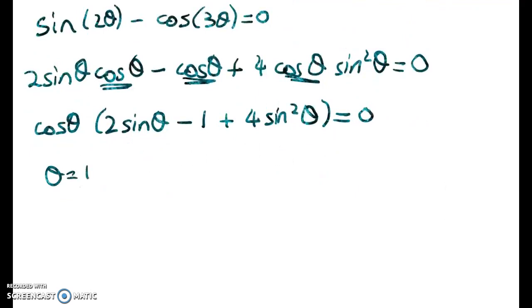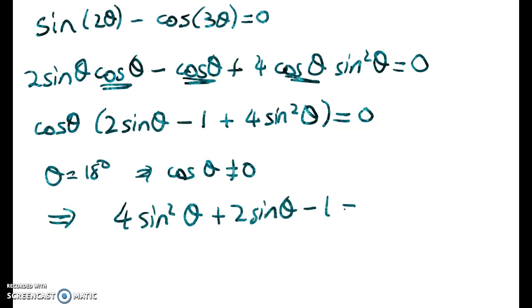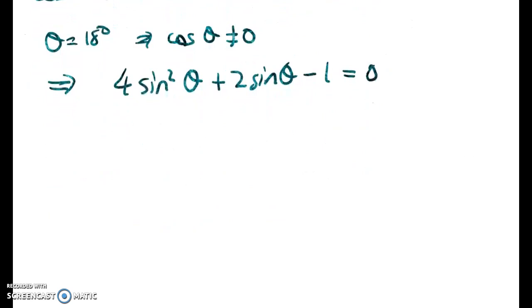Now, θ is 18 degrees. So we know that cos θ is not equal to 0. So it's okay to divide through by cos θ. So we can now write 4 sine squared θ plus 2 sine θ minus 1 is equal to 0. And look, we've got another disguised quadratic. So let sine of θ equal x. 4x squared plus 2x minus 1 is equal to 0.